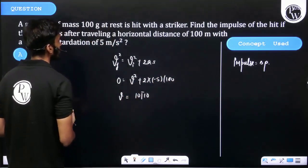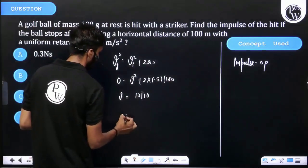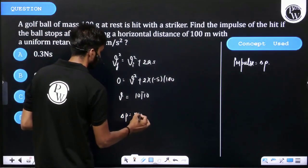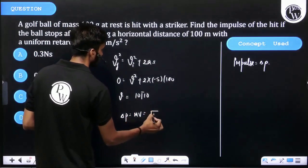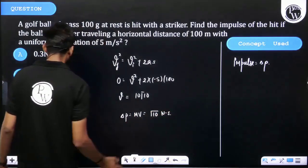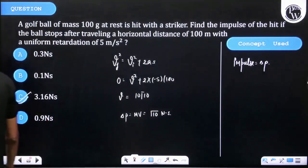Impulse equals change in momentum, which equals mass times velocity. Mass is 100 grams or 0.1 kg, times 10√10 m/s, which gives us approximately 3.16 Newton-seconds. So 3.16 Ns is the correct answer.